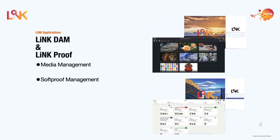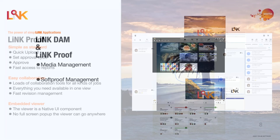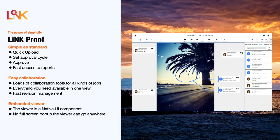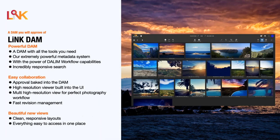Link Proof is meant for quick upload, approvals, and collaboration between users — you have the embedded viewer and that's it. You're uploading files, soft proofing, going back and forth with users via revisions, and finalizing a file. Link DAM has all of that built in, plus the DAM features — searching, metadata, more collaboration, and workflows.